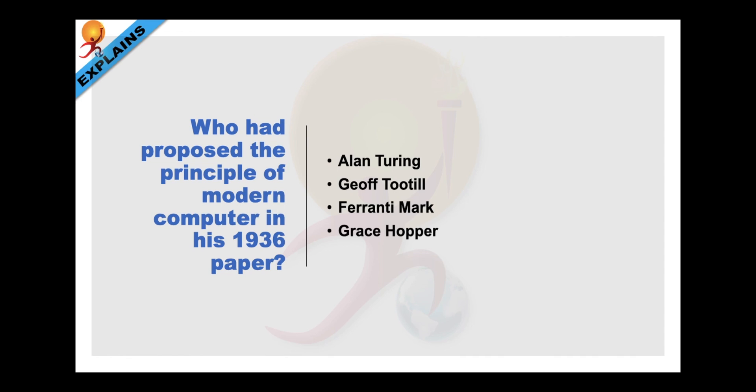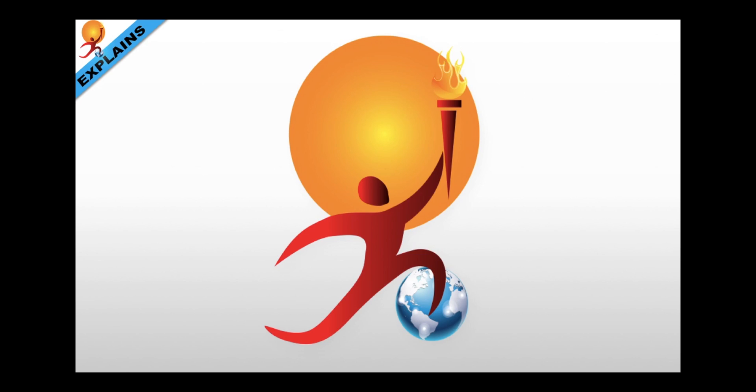Who had proposed the principle of modern computer in his 1936 paper? The principle of modern computer was proposed by Alan Turing in his seminal paper on computable numbers and had proposed a device called universal computing machine. Thank you and see you in the next one.